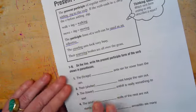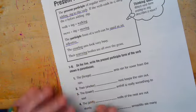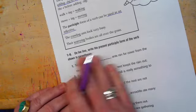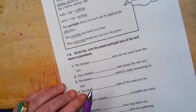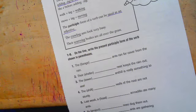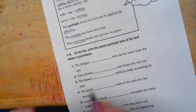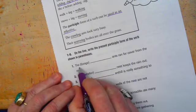All right, so let's make some present participles on the line. The present participle form of the verb shown in parentheses. So sometimes we're going to drop some letters when we do this. If it ends in an E, we're going to drop the E and add ING.